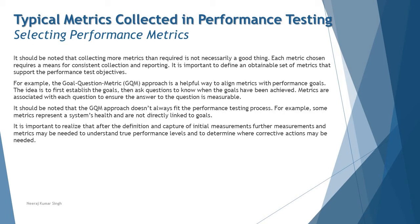The Goal Question Metric (GQM) approach is a helpful way to align metrics with performance goals. You first analyze different goals and understand how they will be achieved, then collect only the metrics related to those goals. The idea is to establish the goal of the performance test, ask questions to know when the goals have been achieved, and associate metrics with each question to ensure the answer is measurable.